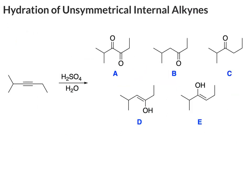Here's a question to pause and try. We now have an internal alkyne, and as soon as you see that you should know there's no Markovnikov selectivity. With that in mind, predict the product or products for this reaction — you're given some choices. Since there's no Markovnikov selectivity, we have the option of adding H to one carbon and OH to the other, or vice versa: OH to one carbon and H to the other.